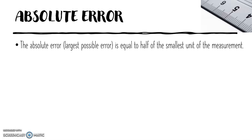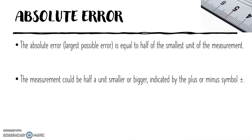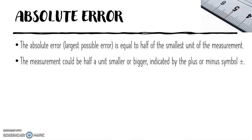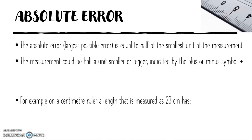Absolute error. The absolute error, or the largest possible error, is equal to half of the smallest unit of the measurement. The measurement could be half a unit smaller or bigger, indicated by the plus or minus symbol.